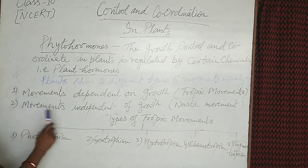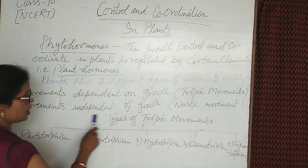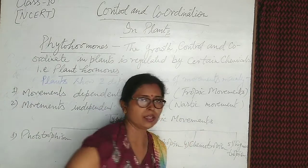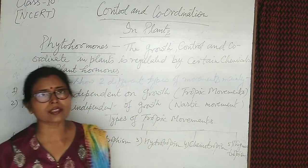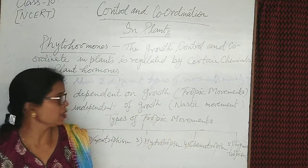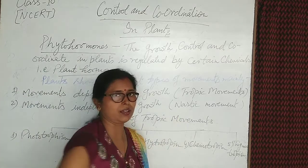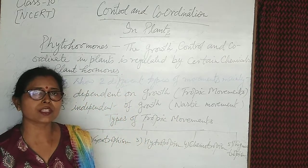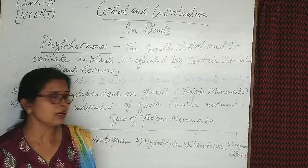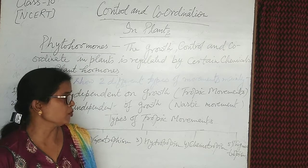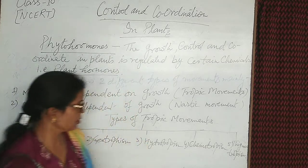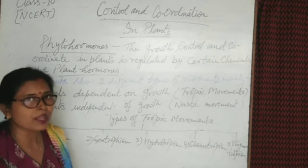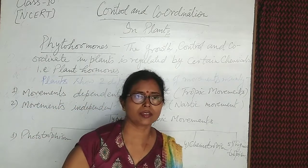The second type of movement is independent of growth. Movement independent of growth is a non-directional movement known as nastic movement. The difference between nastic movement and tropic movement is important for examination purposes. An example of nastic movement is the touch-me-not plant.